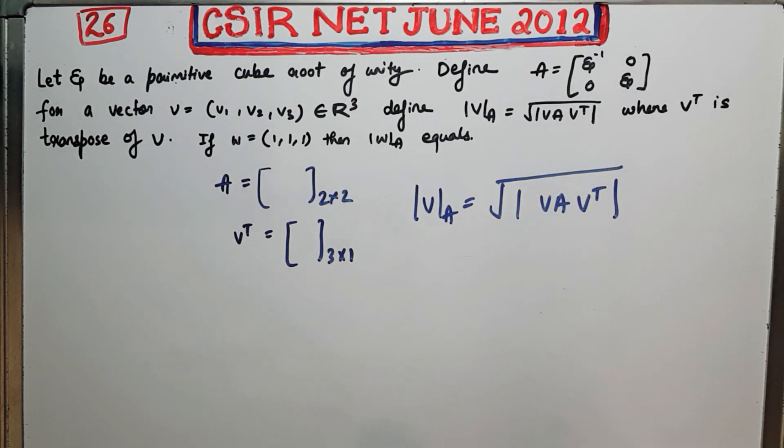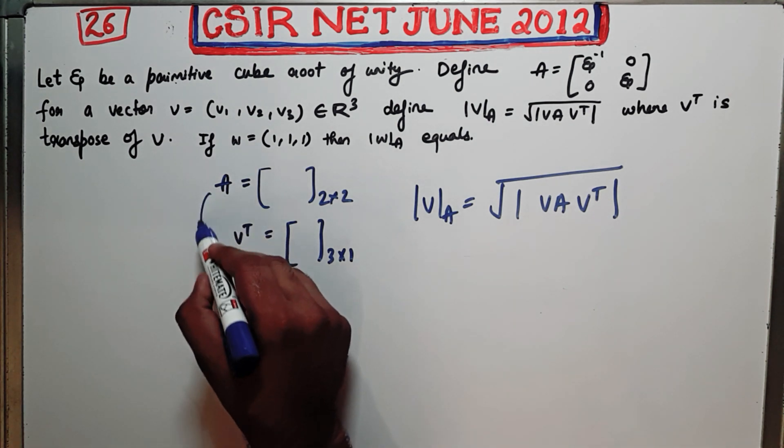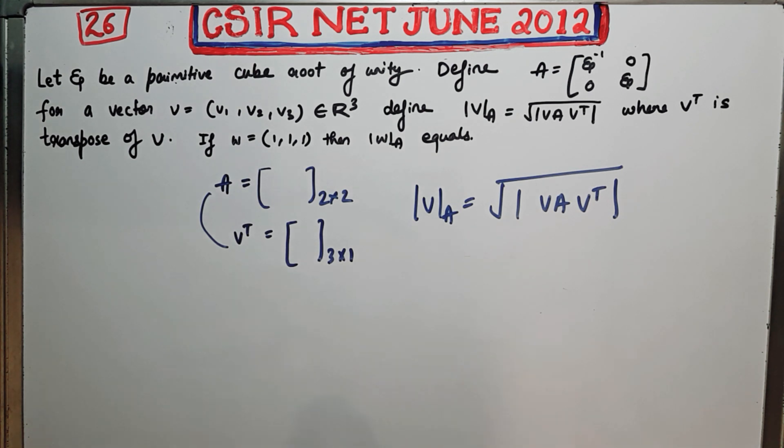But the multiplication is not possible for these two matrices. Are you getting my point? Because this one does not match with this one, so multiplication is not possible. Therefore this question was wrong. Thank you guys.